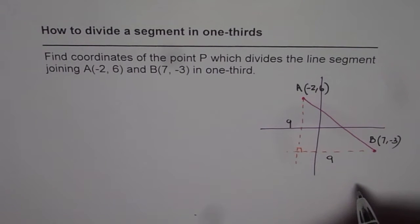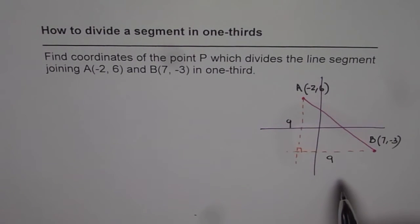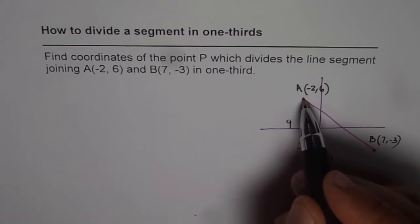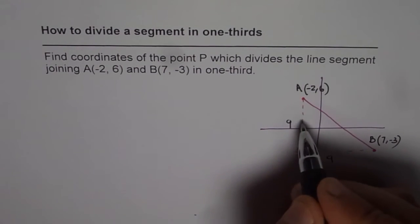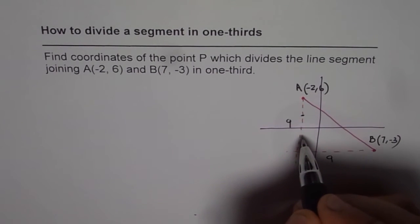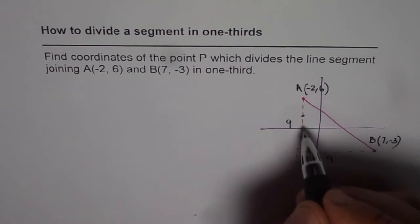Now what we need is to get a point here which will divide into one-third. That is possible if we divide this line also in three equal parts. So if I divide this line into three equal parts, then it should be one-third. Maybe here. Three equal parts.